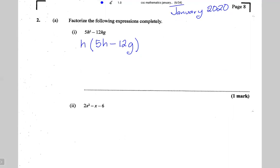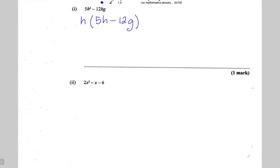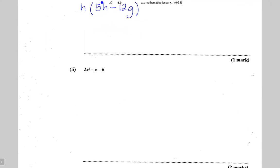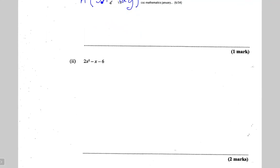The next expression to factorize is a quadratic expression. Using the ABC method, the first thing I would do is find ac. ac is 2 multiplied by minus 6, which is minus 12. Now to factorize the quadratic expression, I'm going to split the middle term and then factorize by grouping.